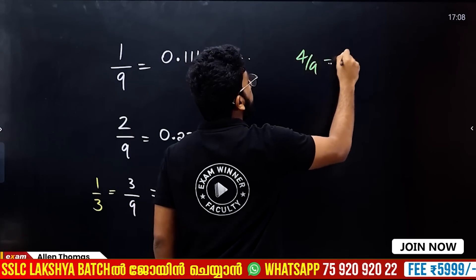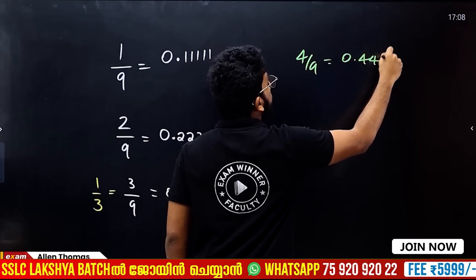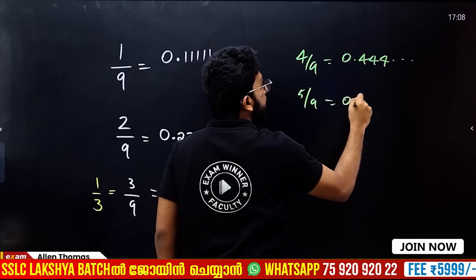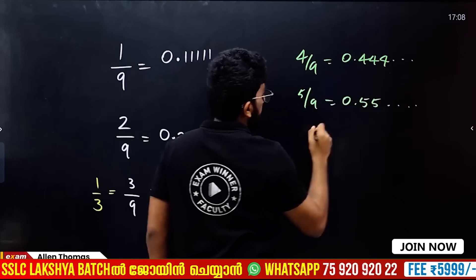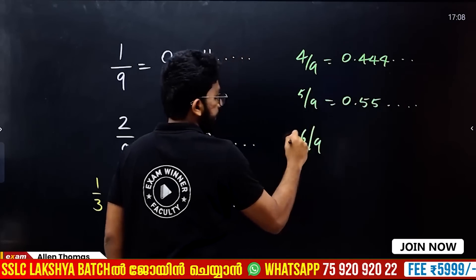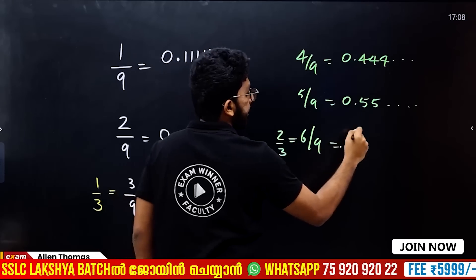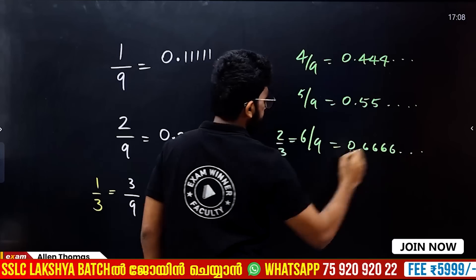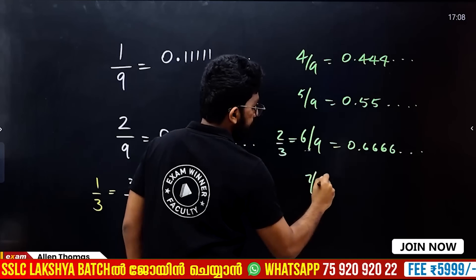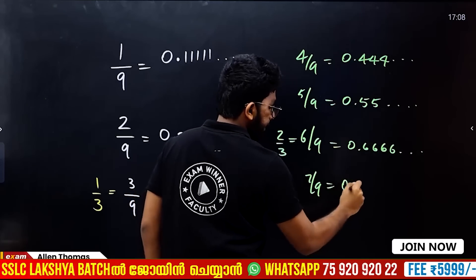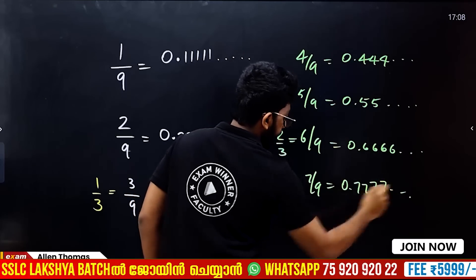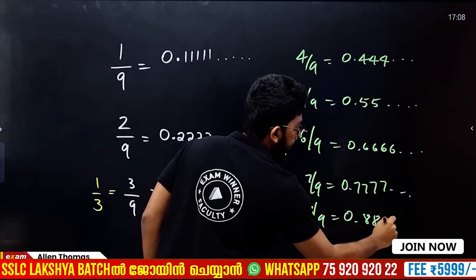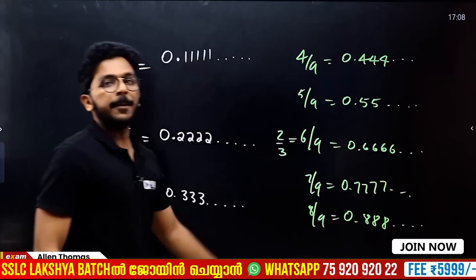4 by 9 equals 0.4444, 5 by 9 equals 0.5555, and 6 by 9 equals 0.6666. 7 by 9 equals 0.7777. 8 by 9 equals 0.8888.